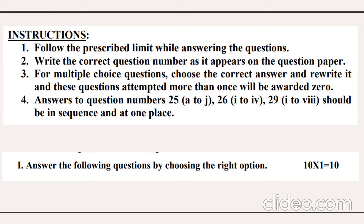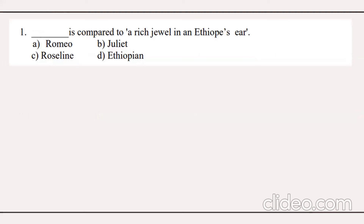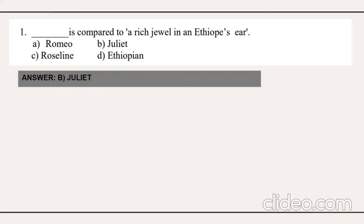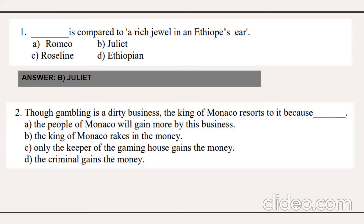Section A consists of multiple choice questions, each with a weightage of one mark. You have 10 questions here with no choice. Question number one: who is compared to a rich jewel in an Ethiopian's ear? The answer is option B — Juliet. Write the full answer, not just the option letter.